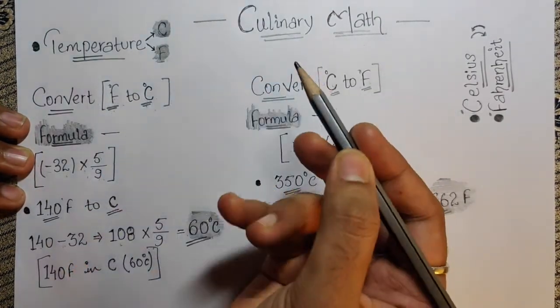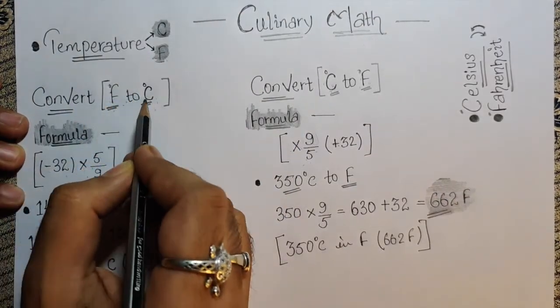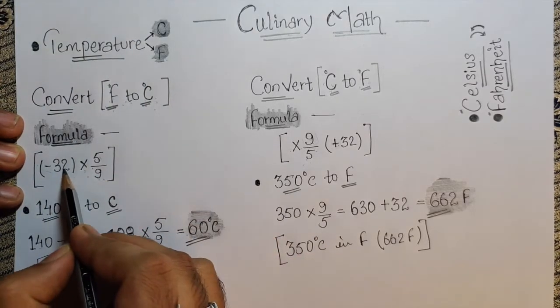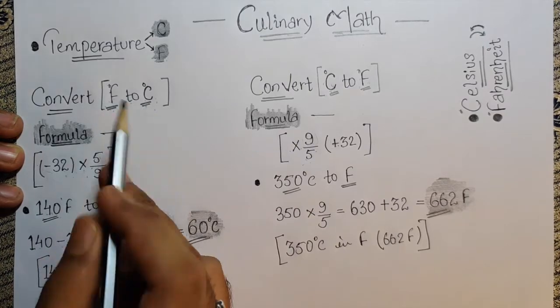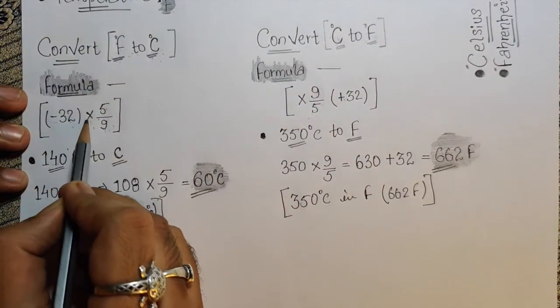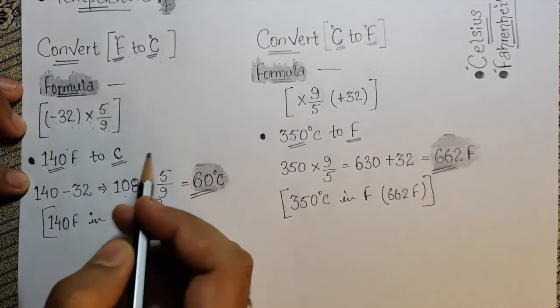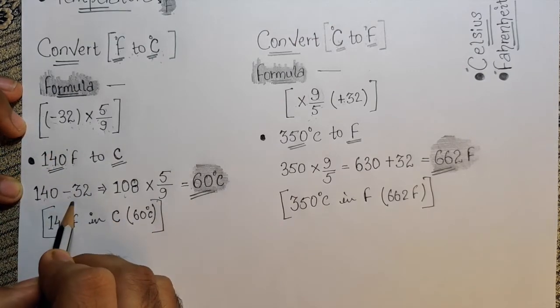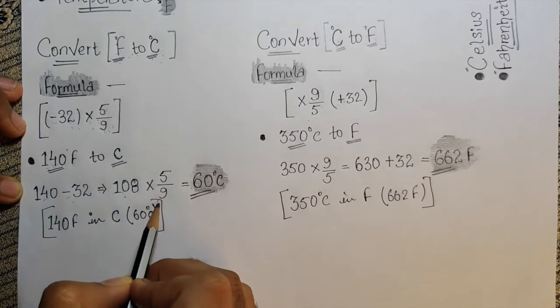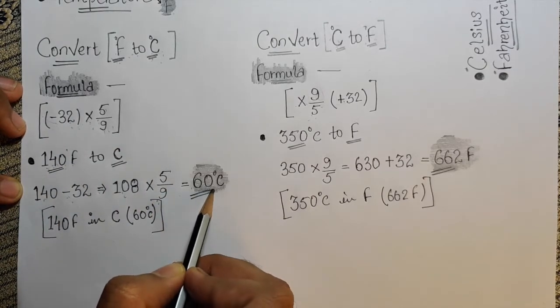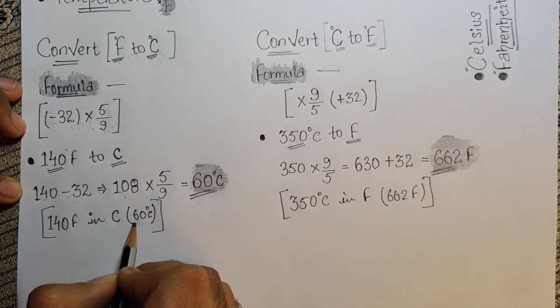Let's start the lesson. I'm explaining how to convert F to C. The formula for Fahrenheit to Celsius is: subtract 32, multiply by 5, then divide by 9. For example, 140 Fahrenheit minus 32 equals 108, then times 5 divided by 9 equals 60 degrees Celsius.